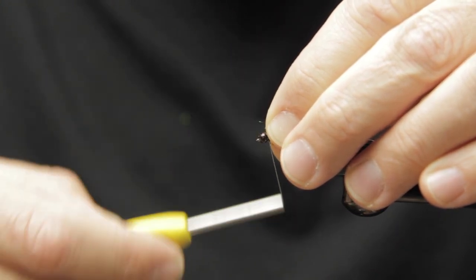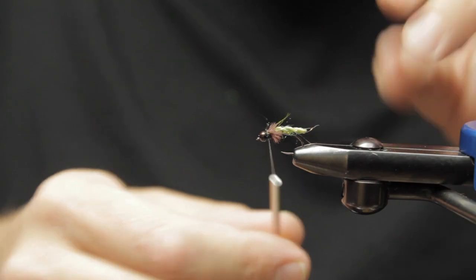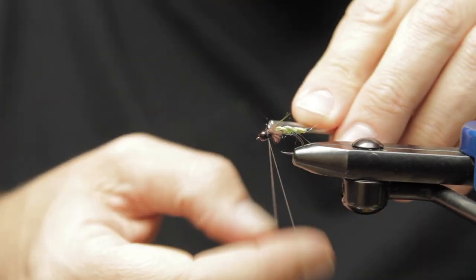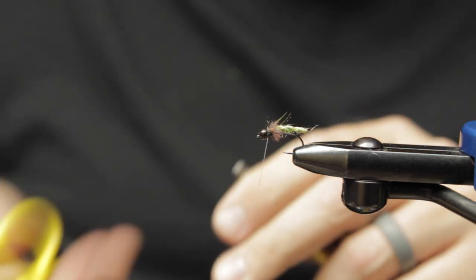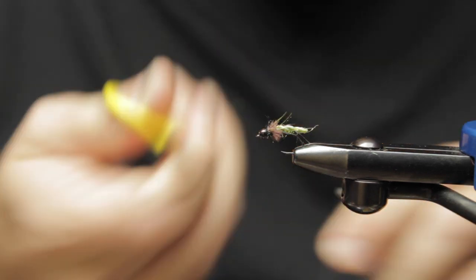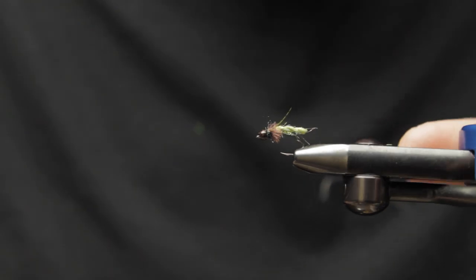And try to pin them in place with this next wrap of ice dub. We'll go ahead and whip finish at this point. This is a great fly. I mean, you can swing this, dead drift it, high stick it, whatever you really want to do. It's going to catch fish, has a good profile, looks buggy.